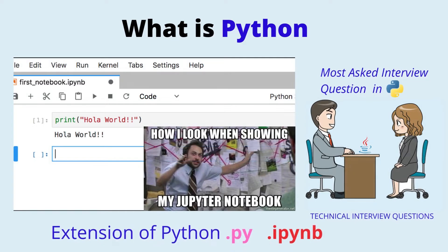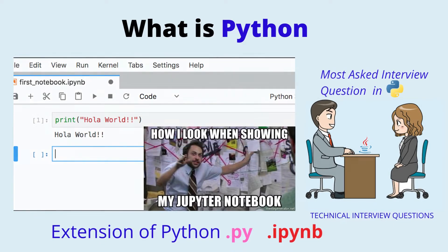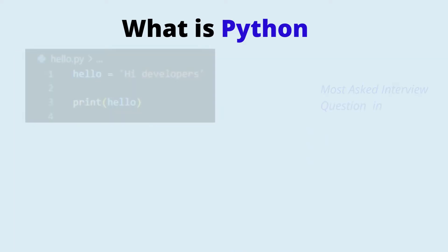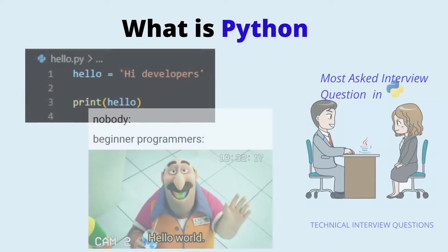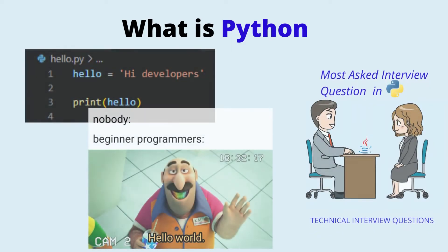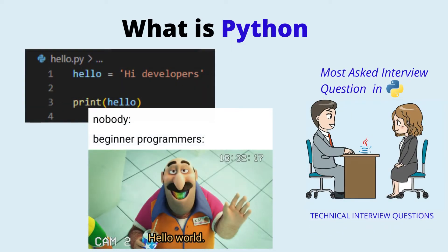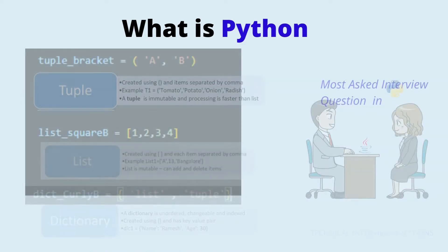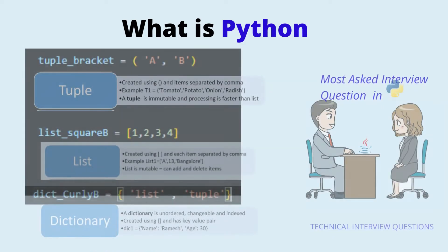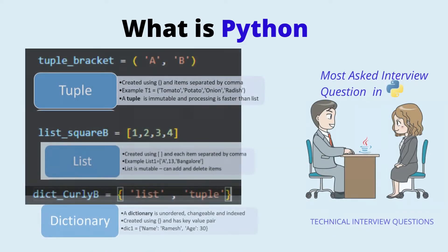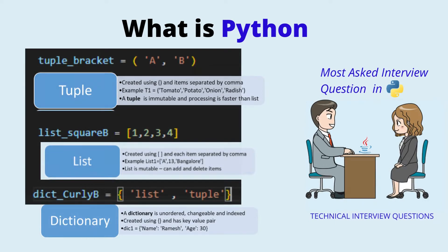The extension of Python is either .py or .ipynb. You can create a variable by setting name equals to value. It also allows you to declare multiple variables on a single line. Python has several other important data types that you'll probably use every day. They are called lists, tuples, and dictionaries.